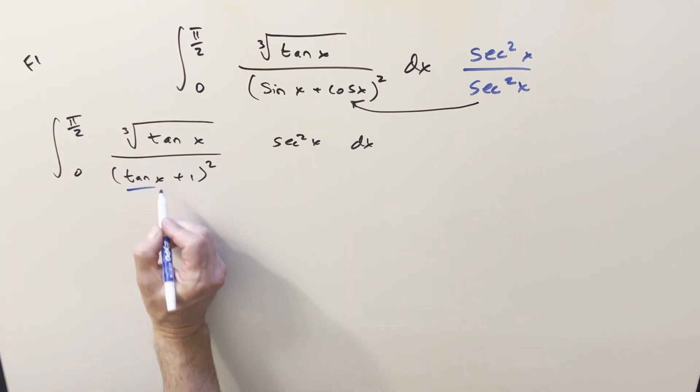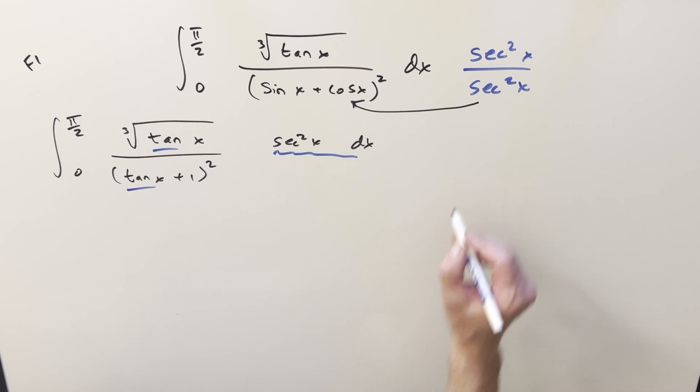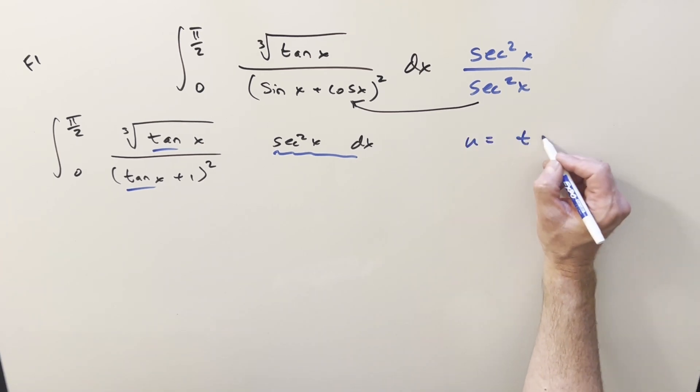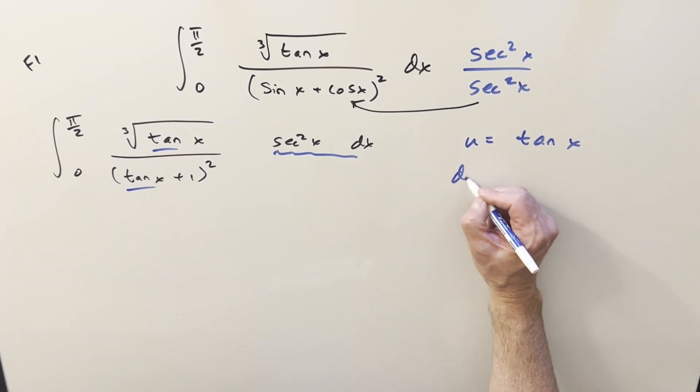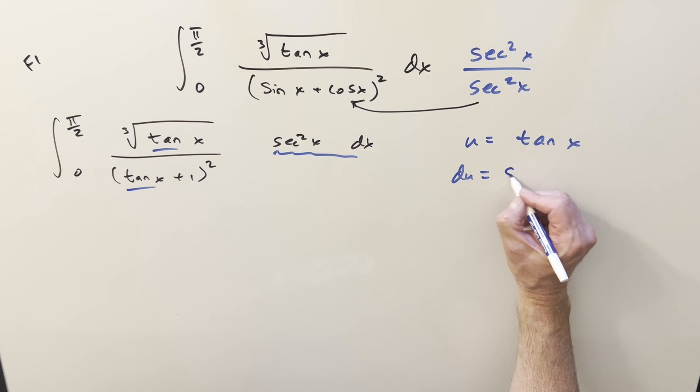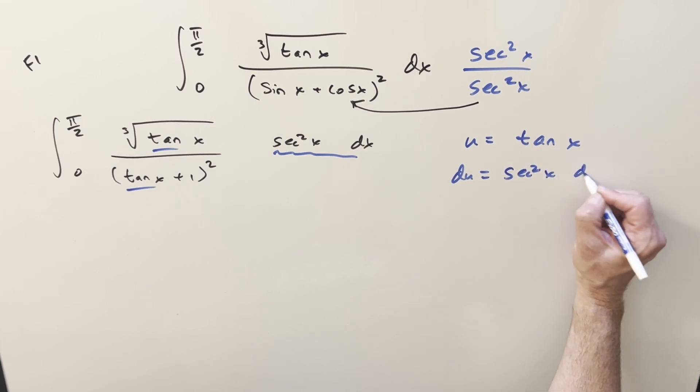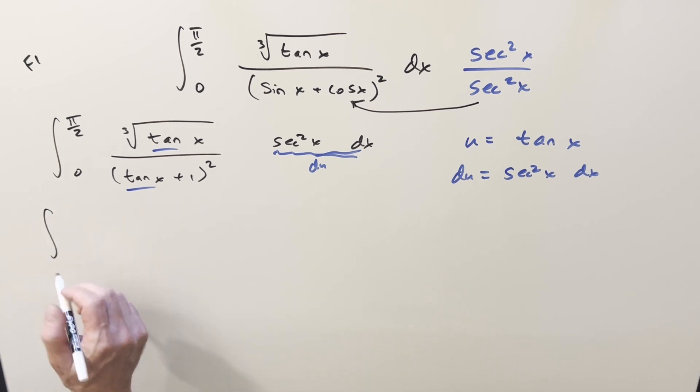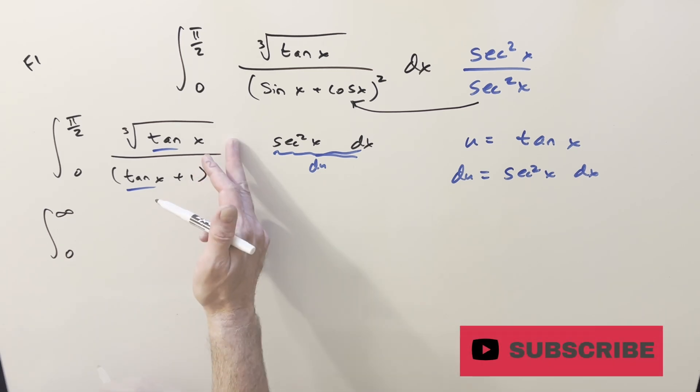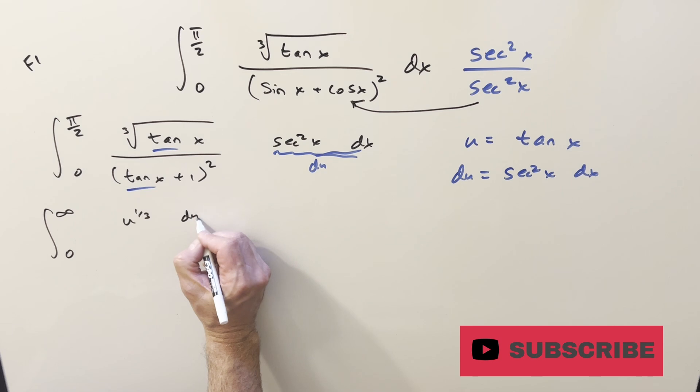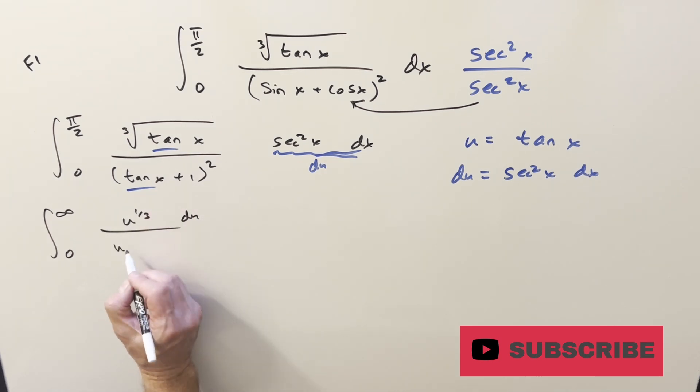And then now because we've got tangent here and here and the derivative of tangent right here, I can do a u substitution on it. We'll set u equal to tan x, du equals secant squared x dx. So we have our du right here. Go ahead and substitute. Now plug in pi over two. Tan at pi over two is going to infinity. Plug in zero, we get zero. This piece I can write as u to the one-third. All this is du. And then the denominator just becomes u plus one all squared.